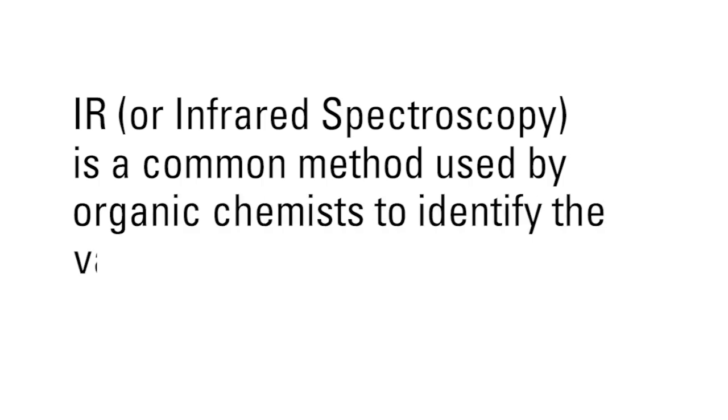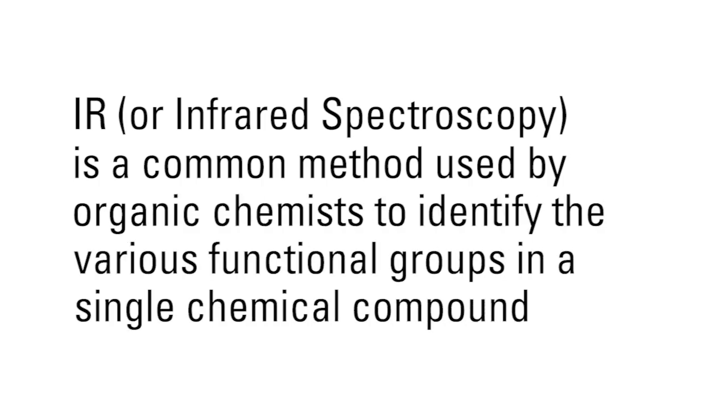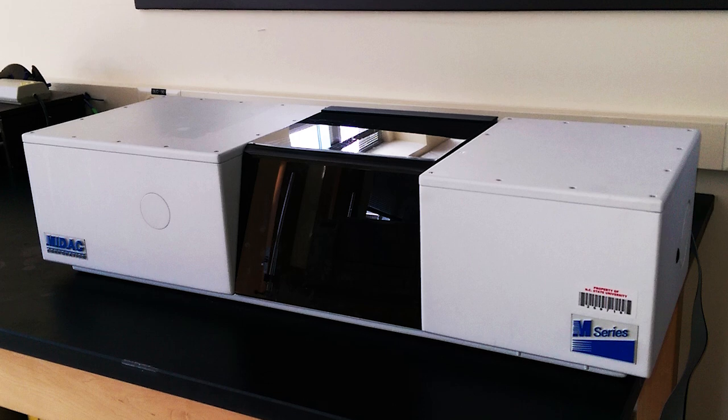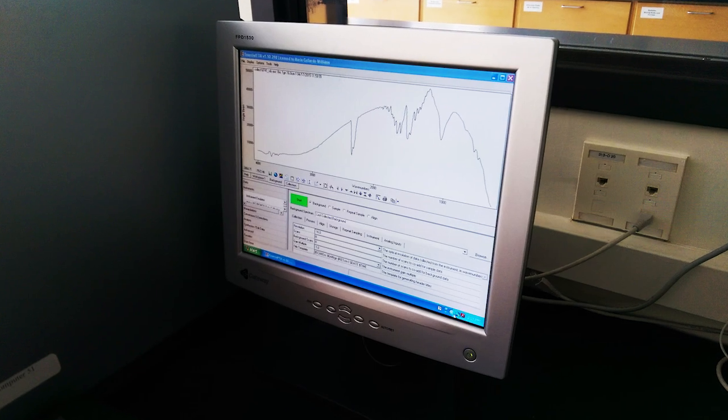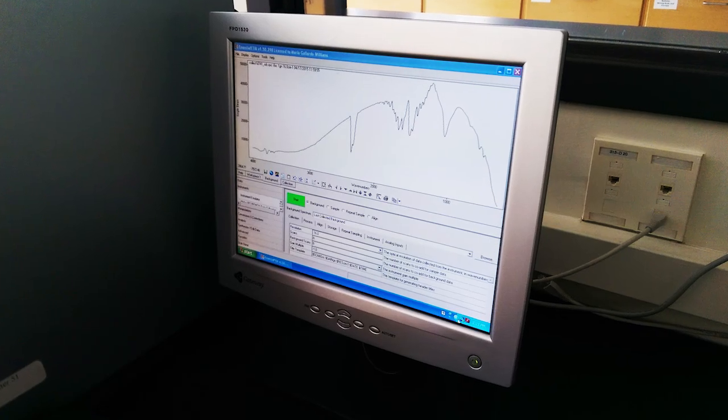IR, or infrared spectroscopy, is a common method used by organic chemists to identify the various functional groups in a single chemical compound. Using IR is beneficial in conjunction with other methods of spectroscopic identification rather than solely relying on IR for structural determination.